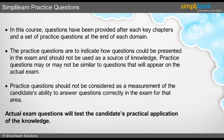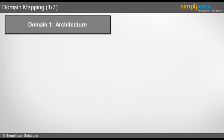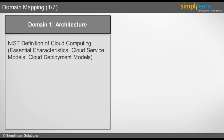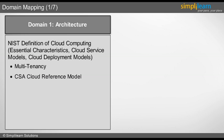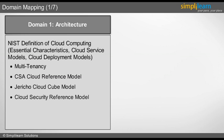Domain 1: Architecture. In this domain we will understand the definition of cloud computing, essential characteristics of cloud, cloud service and deployment models available. Additionally, we will understand multi-tenancy, the CSA reference cloud model, the Jericho cloud cube model, cloud security reference model, cloud service brokers and service level agreements.